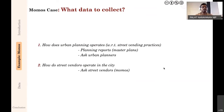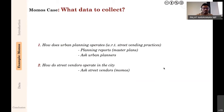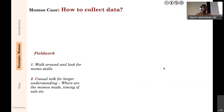To understand how planning operates, I looked at planning reports — reading master plans from archives online. For things I couldn't understand from the final documents, I could talk to urban planners involved in these exercises. To understand how street vendors operate, I had to ask the street vendors themselves. I arrived in Delhi — a city I had lived in for six or seven years — walked around randomly looking for momo stalls, and engaged in very casual talk: where the momos were made, what time do you set up the stall.